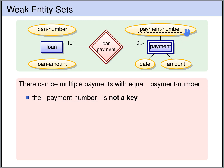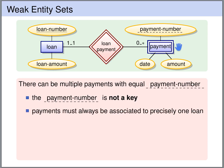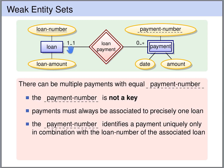In particular, the payment number is not the key for the payment entity set. There can be many payments with the same payment number. So how do we identify payments then? The point is that every payment must be associated to precisely one loan. And the payment number identifies a payment uniquely in combination with the loan number of the associated loan. So the combination of the loan number and the payment number forms a key for the weak entity set payment.